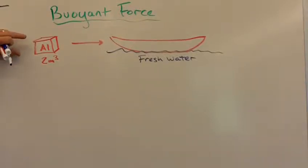Okay, buoyant forces. Let's imagine we're going to build a canoe. So somebody gives us a two cubic meter block of aluminum. That's pretty big.